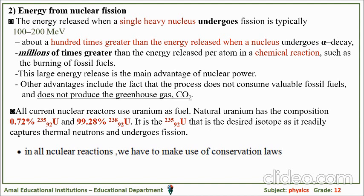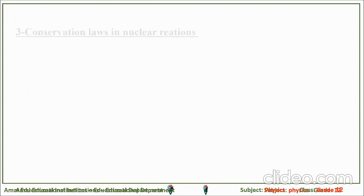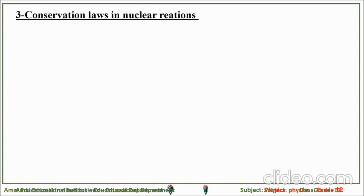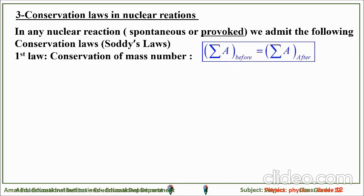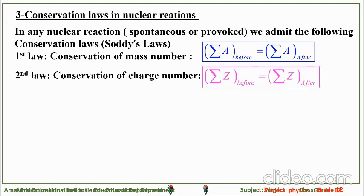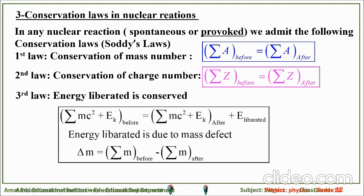In all nuclear reactions, we make use of conservation laws. In any nuclear reaction, spontaneous or provoked, we admit the following conservation laws. First, conservation of mass number: the sum of mass numbers before the reaction equals the sum after. Second, conservation of charge number: the sum of charge numbers before equals the sum after. Third, energy is conserved: the energy liberated is due to the mass defect. We have rest energy mc² plus kinetic energy before, equal to rest energy plus kinetic energy after, plus the energy liberated.